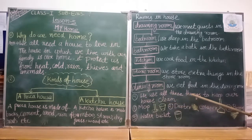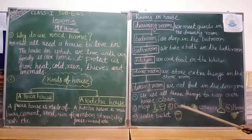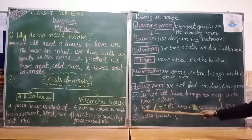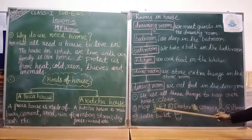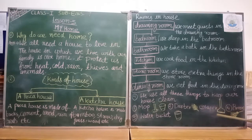Now, we use all these things to keep our house clean. I have pictures drawn here. Number one is mop — we use a mop to clean the floor. Number two is duster — we use a duster to clean dust. Number three is wiper. Number four is broom — broom means 'jhaadu'.